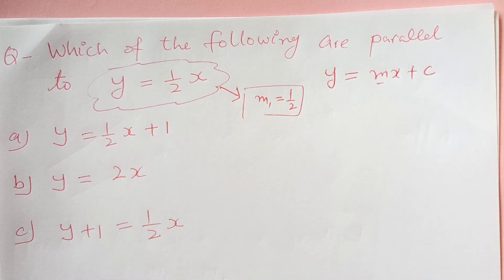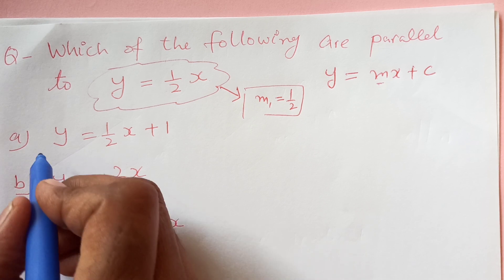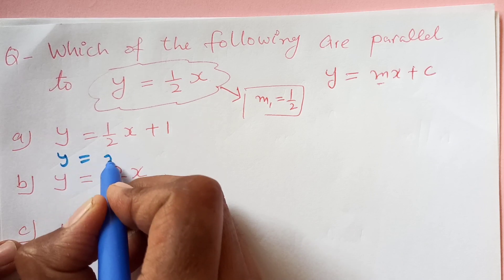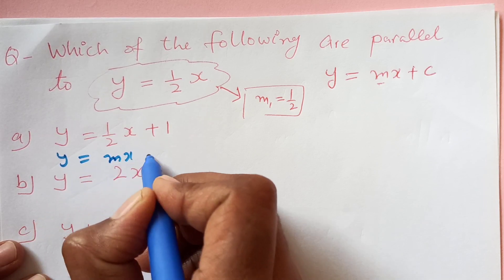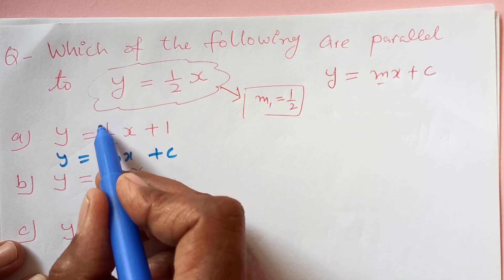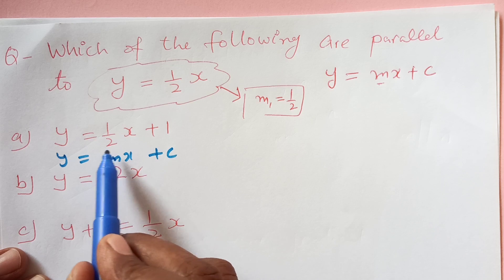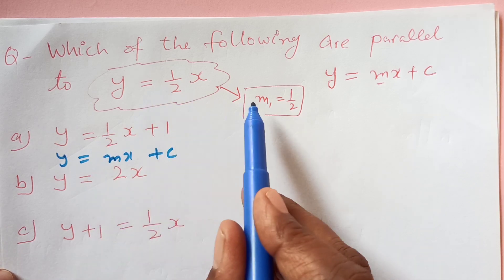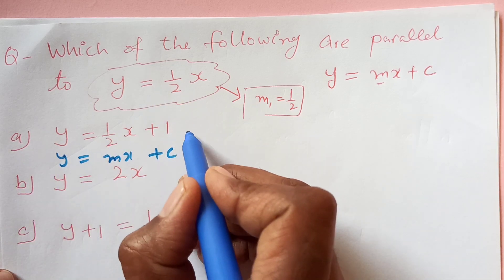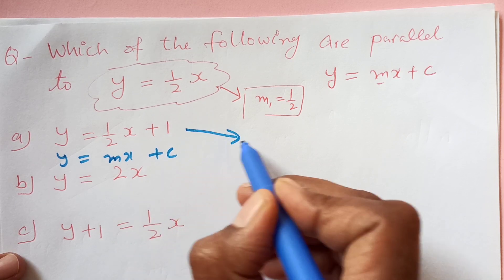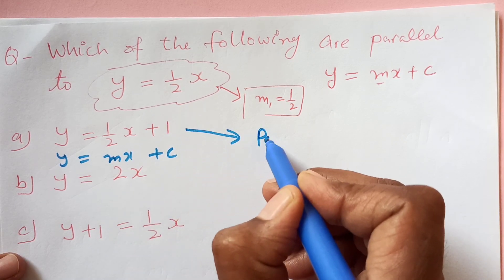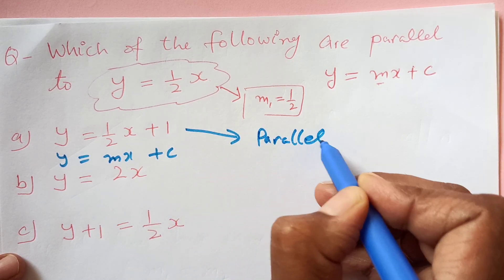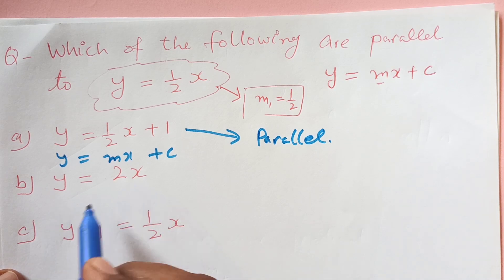We have another line here. Again we will see this line as y equals Mx plus C, so the gradient is also half. That means this line is parallel to the given line. Now for the other one, comparing with y equals Mx plus C, M is 2. Here M2 was half and here M is 2, so the gradient is 2, meaning it is not parallel to that line.